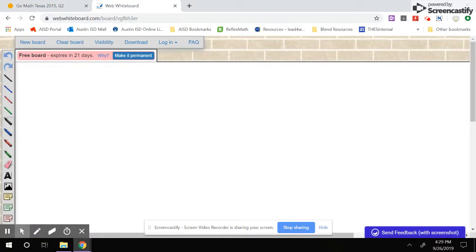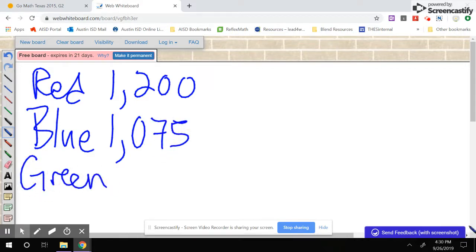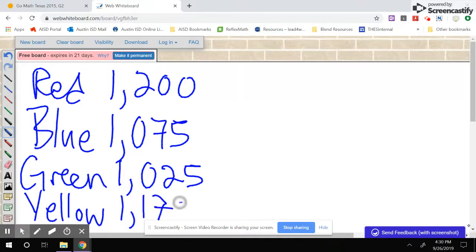So here we have red is 1,200, blue is 1,075, green is 1,025, and yellow is 1,170.